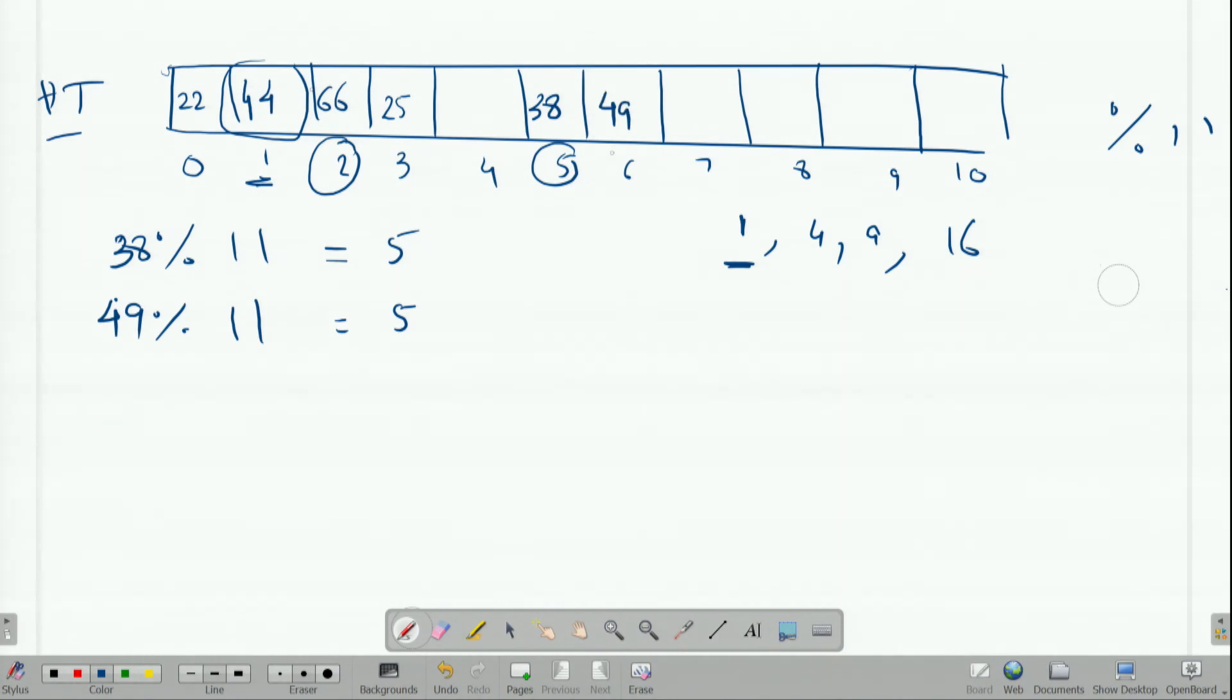Now suppose there is one more element which maps to 5. What will we do? We check 5. It is not empty. So we move by 1, we check 6. It is not empty. So now we move by 4. We do 6 plus 4 which is 10. When we come to 10, we can add our new element there. This is the idea behind quadratic probing.